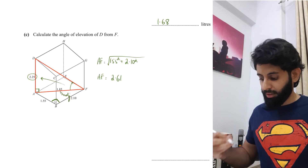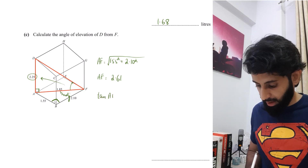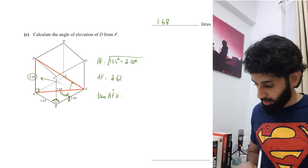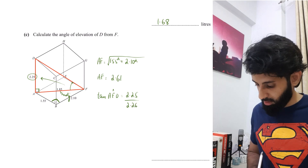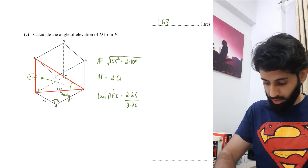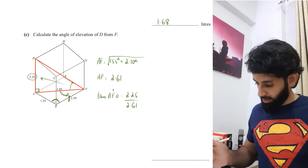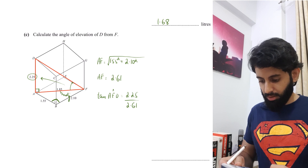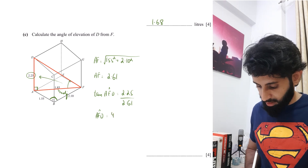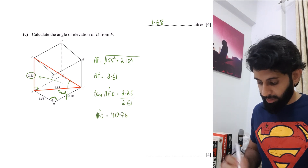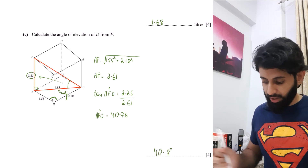Now I have opposite = 2.25 and adjacent = 2.61, so I use tan. tan(∠AFD) = 2.25 ÷ 2.61. Taking the inverse tan: ∠AFD = 40.76°. Since angles should be given correct to one decimal place, the answer is 40.8 degrees.